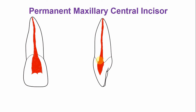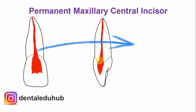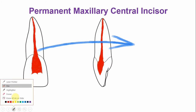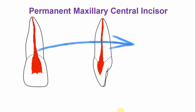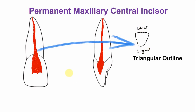Now let's look at how the tooth appears in a cervical and mid-root cross-section. If we cut the section of the tooth at the cervical area — as indicated by the arrow — the outline of the root is triangular. The labial part is here, and the lingual part is here. At this cervical area of the root, the pulp cavity is oriented toward the lingual aspect.